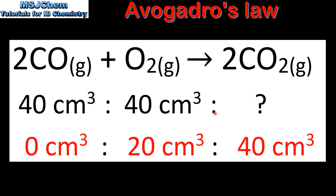And next the carbon dioxide. If we look at the ratio of carbon monoxide, which is the limiting reactant, to carbon dioxide, we can see it's a 2 to 2 ratio. We started with 40 cm³ of carbon monoxide, so that means we'll be able to make 40 cm³ of carbon dioxide.